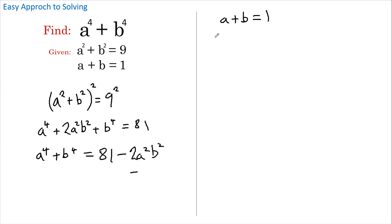So a squared plus 2 a b plus b squared equals 1 squared or 1, and rearranging we get that 2 a b equals 1 less a squared plus b squared.